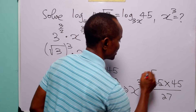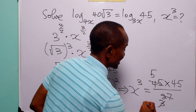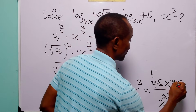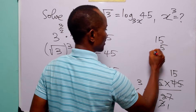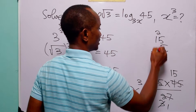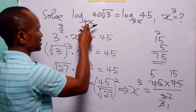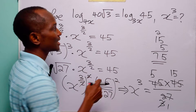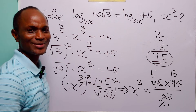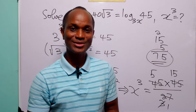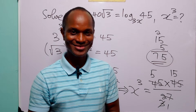Simplifying: 9 divides 45 to give 5, and 9 divides 27 to give 3; then 3 divides the remaining 3 to give 1, and 3 divides 45 to give 15. So we get 15 times 5, which is 75. Therefore, x³ = 75. That's the end of today's tutorial — I hope you learned something new. Please subscribe, leave a like, thanks for watching, and see you in the next video.